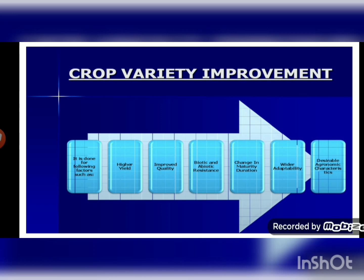Desirable agronomic characteristics: tallness and profuse branching are desirable characteristics for fodder crops, since greater plant length is more beneficial. Such tall-branching varieties are produced for fodder plants. In cereals, however, tallness is not required — only good seed quality is important, so dwarfness is the desired trait in cereals so that less nutrients are consumed. Developing varieties with desired agronomic characters helps give higher productivity.